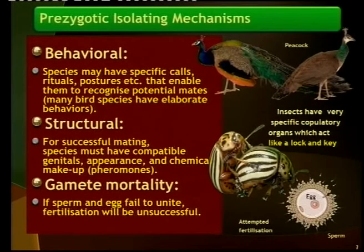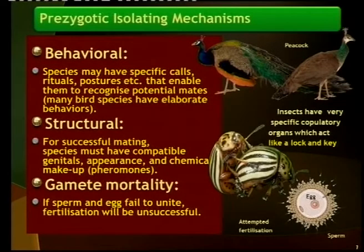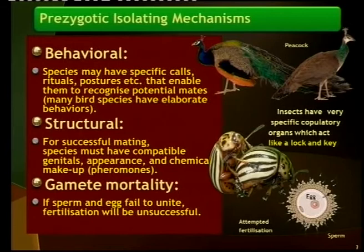There are more prezygotic isolating mechanisms. The one discussed is behavioral — certain calls that birds make to attract one another are a behavioral mechanism. There is also structural: species must be compatible, the genitals must be compatible and able to copulate. And then gamete mortality: if the sperm cell will never reach the egg, then no zygote will be formed. These are all prezygotic mechanisms that prevent fertilization.